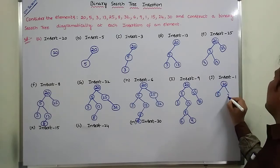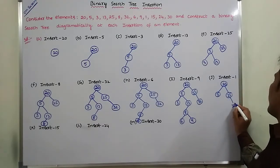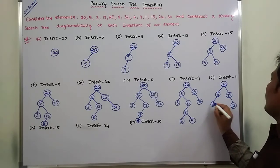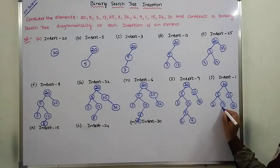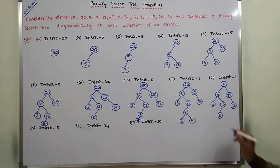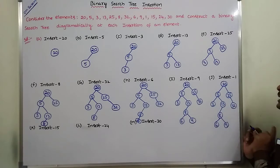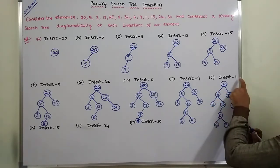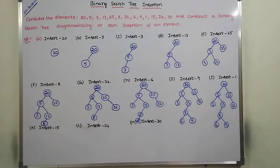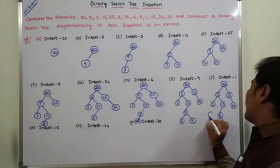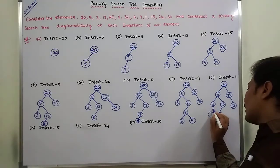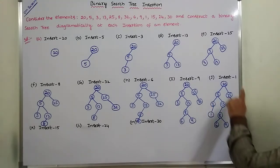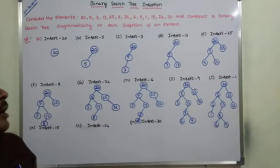Next, we have to insert element 1 into the existing binary search tree. Element 1 is compared with root node 20 — 1 is less than 20, so go to the left subtree where node 5 is there. 1 is compared with 5 — 1 is less than 5, so go to the left subtree where 3 is there. 1 is compared with 3 — 1 is less than 3, so go to the left subtree. Here the left subtree is empty, so we create a node and insert 1. Now 1 becomes the left child of node 3. This is the binary search tree after inserting element 1.